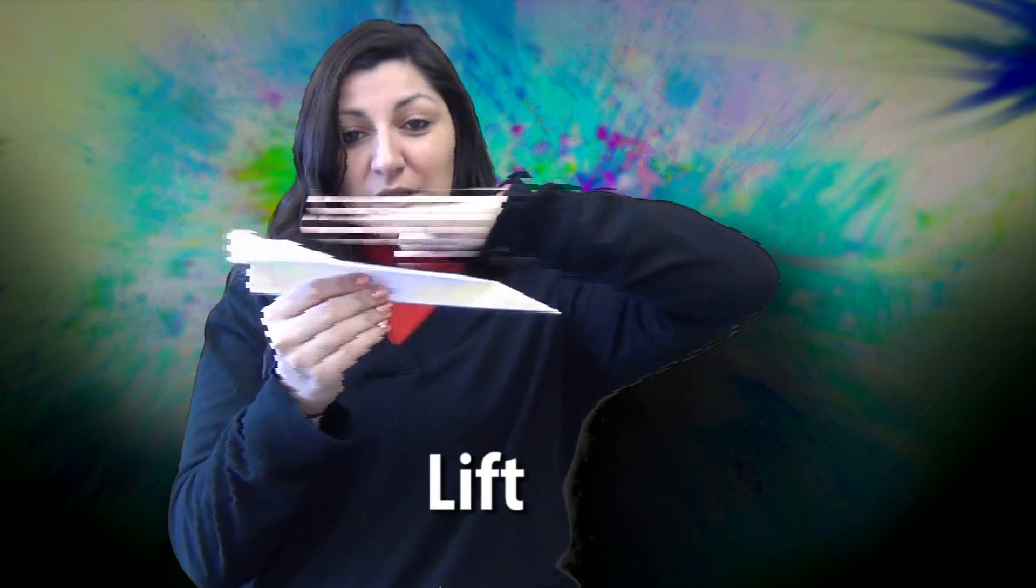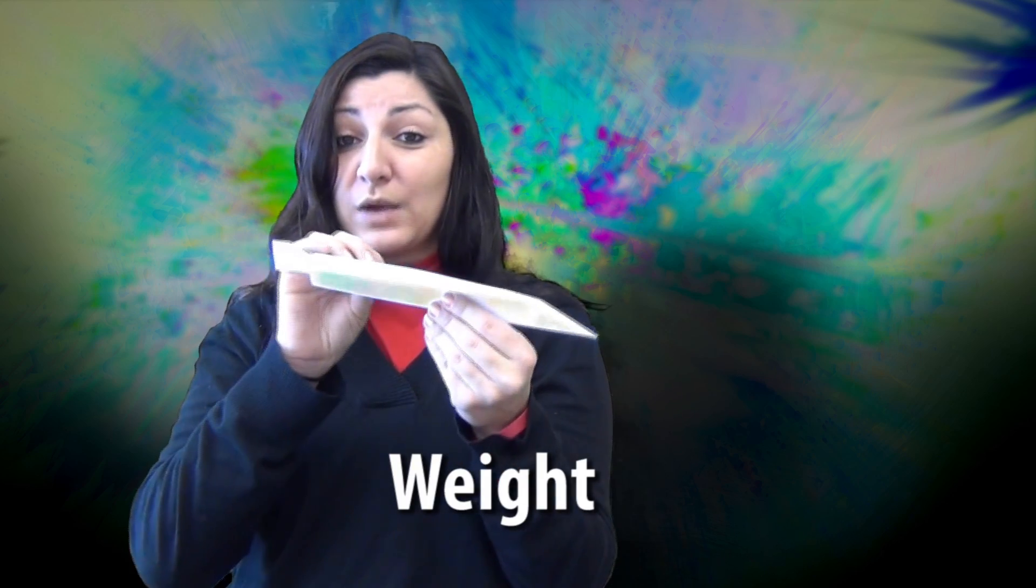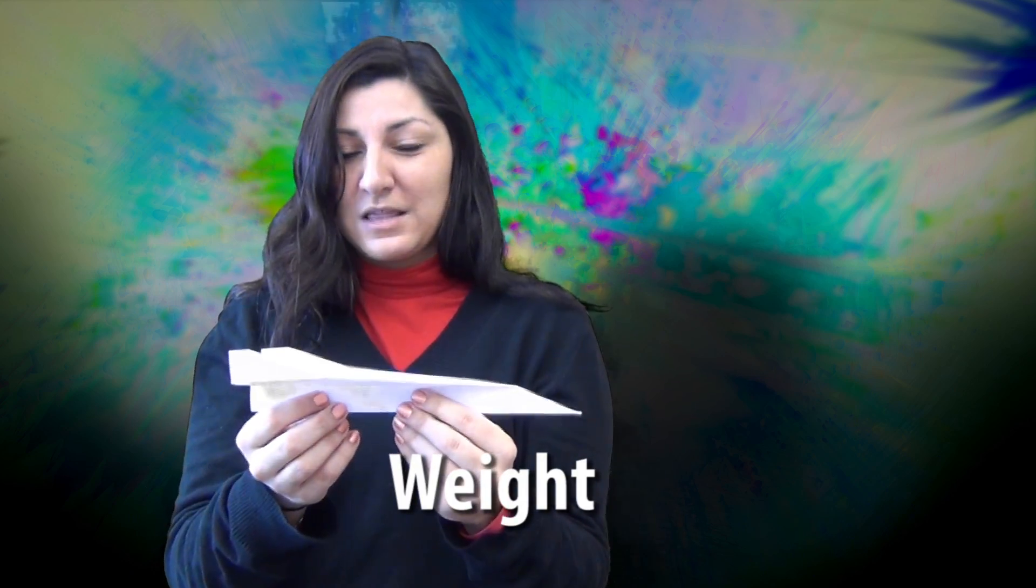So the bigger the wings, the more lift we have. However, we have to be careful - if we have bigger wings, we're going to have more weight and it's going to keep it going down. The next two forces we have are the truss and the drag.